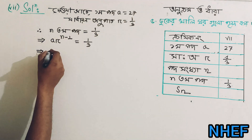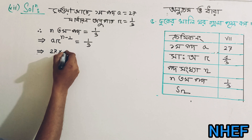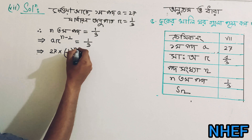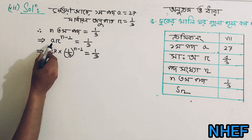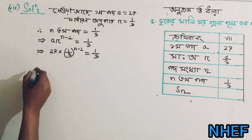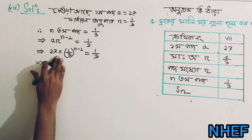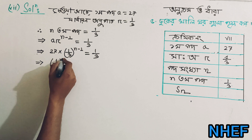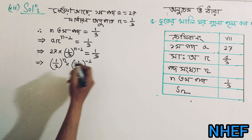Now notice: a's value we've taken as 27 and r's value we've taken as 1 divided by 3. So: 27 times (1/3) to the power n minus 1 is equal to 1 divided by 3. That gives us (1/3) to the power n minus 2.